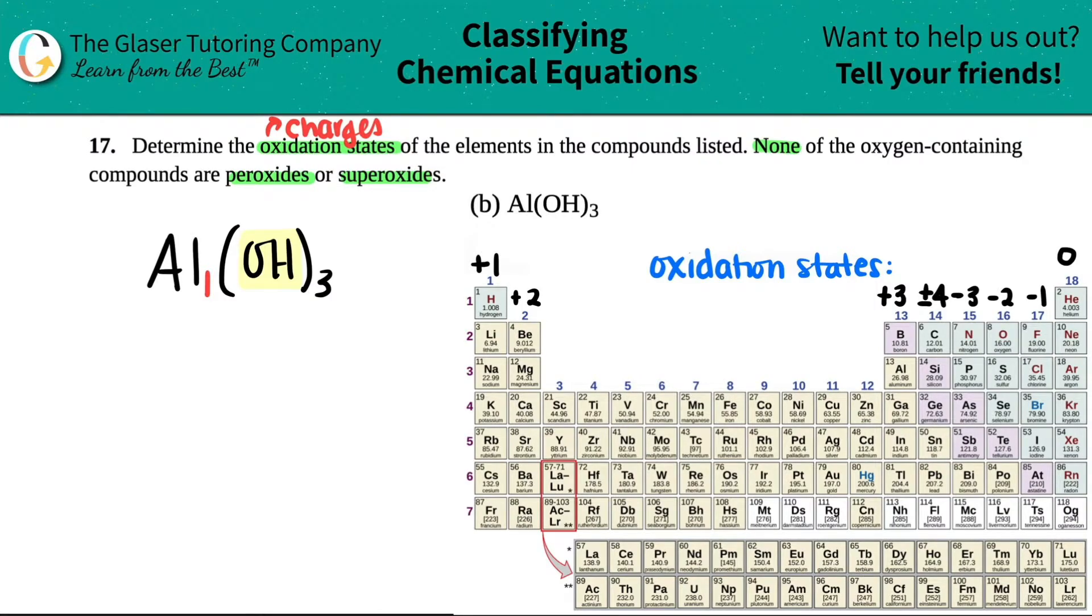So I'm going to crisscross these two numbers to get the charges. Let's see. So this one will crisscross and tell me that the polyatomic OH has a negative one charge. And this three will crisscross up to tell me that the aluminum was a plus three charge. So that kind of separates a little bit. We have aluminum as a plus three, and now we have the polyatomic OH being a minus one total.